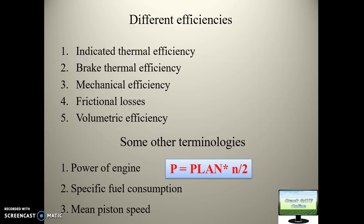Next is specific fuel consumption. Specific fuel consumption is the amount of fuel consumed per horsepower per unit time — basically kg per hp per hour. It tells you how much fuel is required to operate an engine of one horsepower for one hour. Specific fuel consumption = fuel consumption per unit time / power.